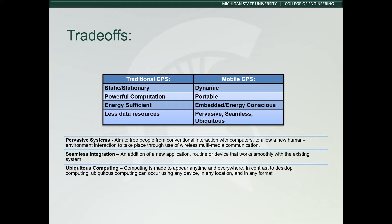The trade-offs between traditional and mobile differ. Some of the key differences are in the table shown. Traditional CPS is static in the fact that its system is stuck in one area or bound to many different areas throughout a system's environment. It can process complex problems or large amounts of data because it is connected to a constant energy source, such as a power grid.